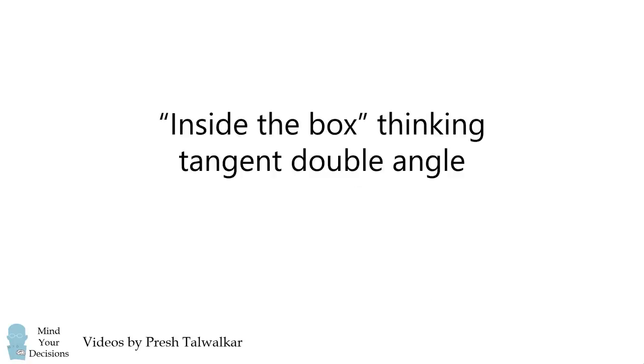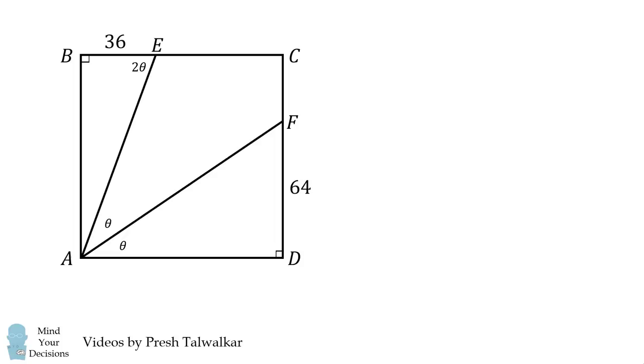Now, let's do some inside-the-box thinking. First, we use the same diagram with the angles. Now, suppose the side of the triangle is equal to X. So, if AD is equal to X, then AB is also equal to X. In this triangle, we have the tangent of theta is equal to 64 over X. In triangle ABE, we have the tangent of 2 theta is equal to X over 36.